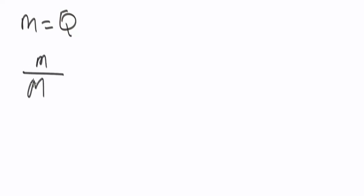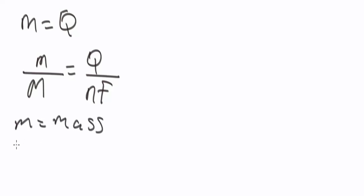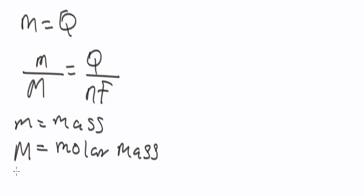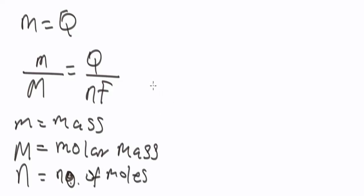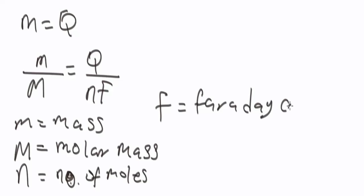The formula is: mass over molar mass equals quantity of electricity over (number of moles times Faraday's constant). Here, m is the mass deposited, capital M is the molar mass of the substance, n is the number of moles of electricity, and capital F is Faraday's constant, which is 96,500 coulombs.